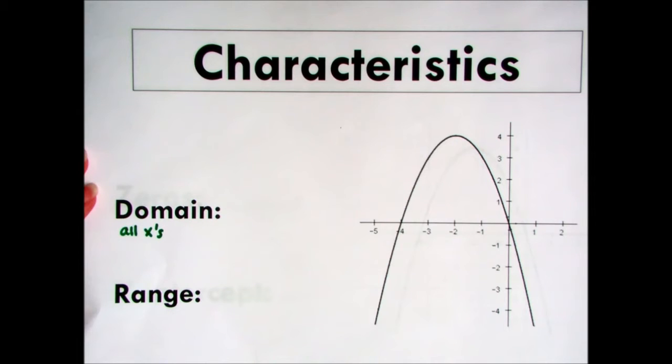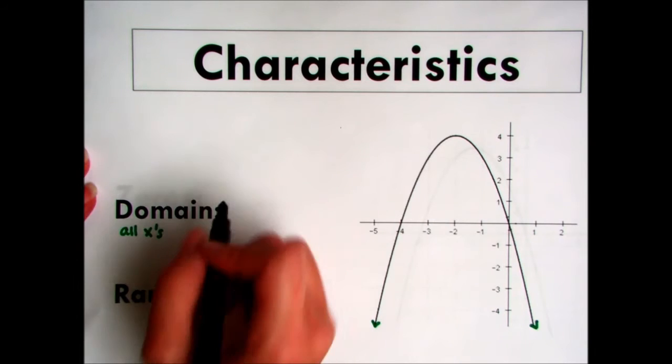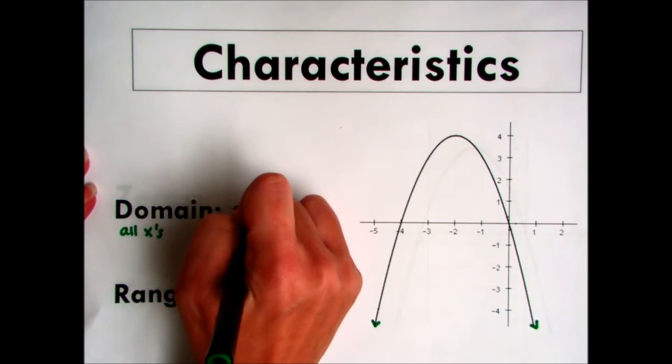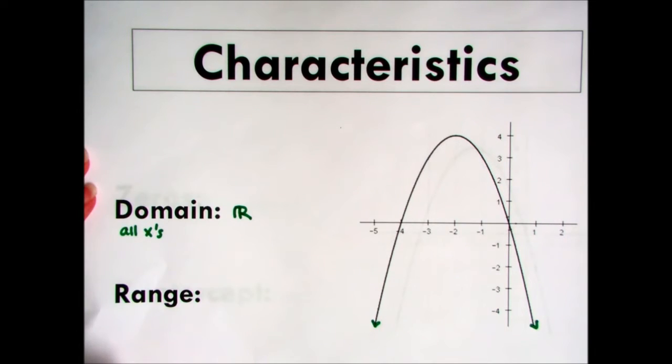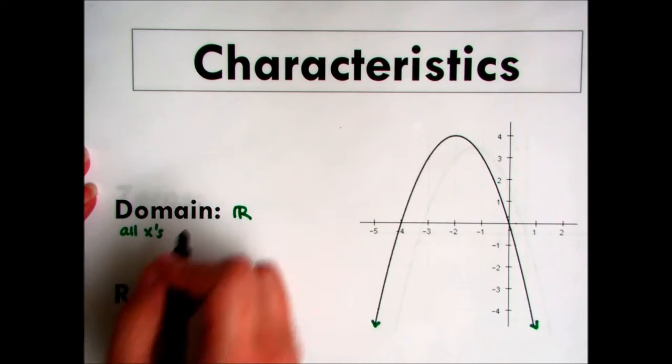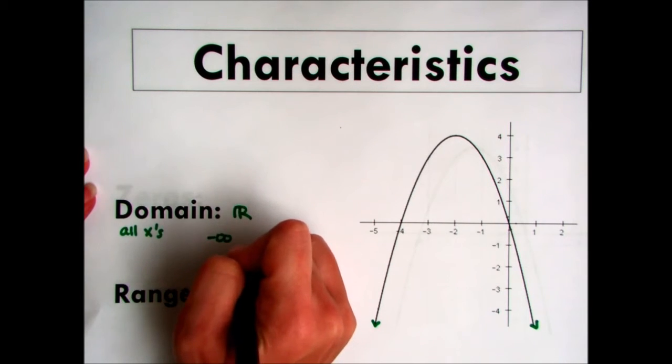So there are several ways we can write this. Notice that this graph really has arrows here, and it's going forever to the left and forever to the right. Because of that, x can actually be any value, which means it's all real numbers. Another way that we can state this is that we can go from the farthest left, which would be negative infinity, to the farthest right part of the graph to positive infinity.